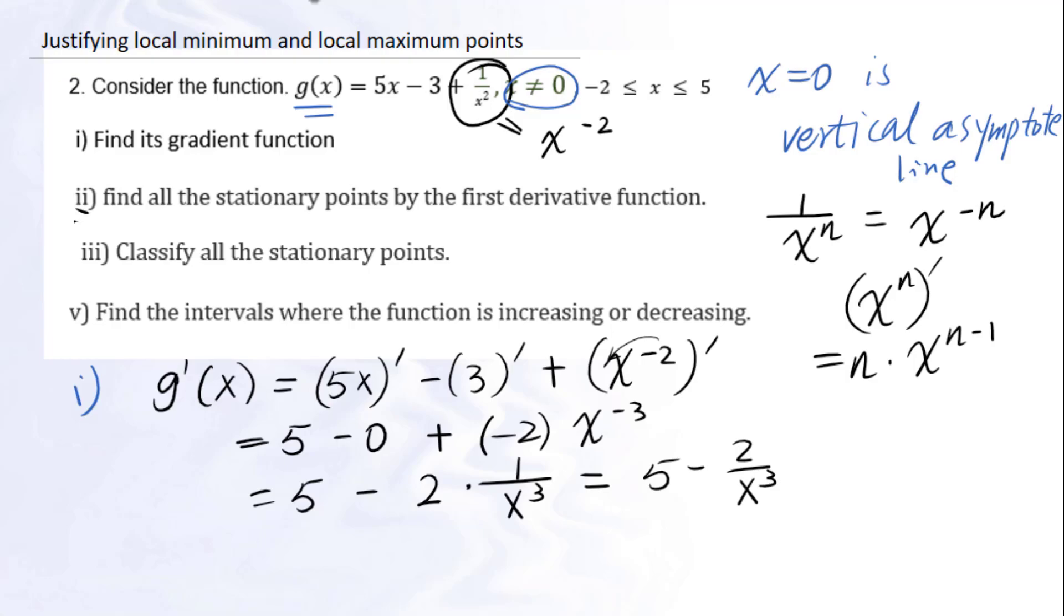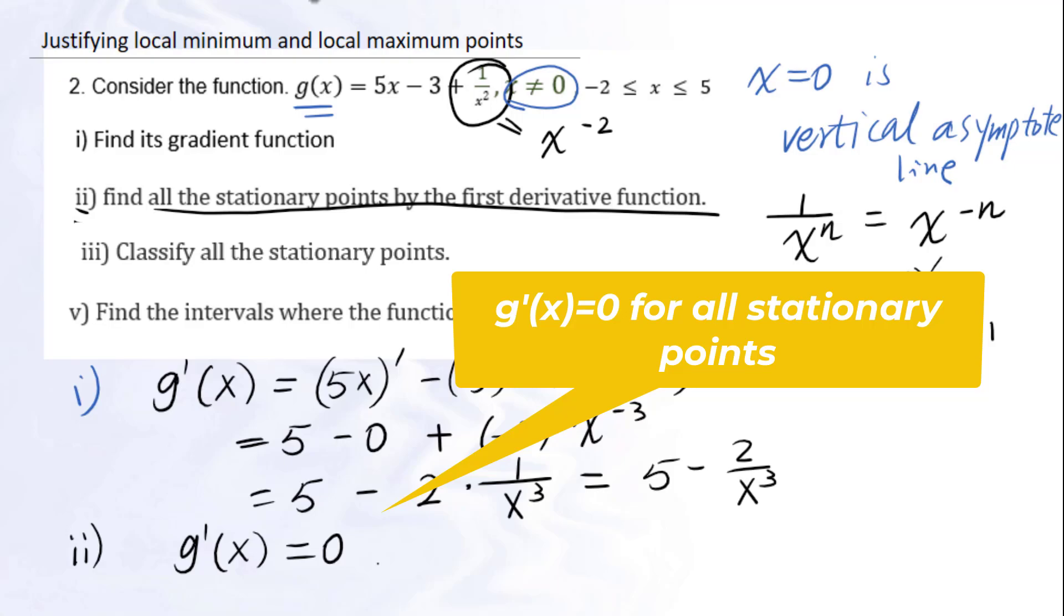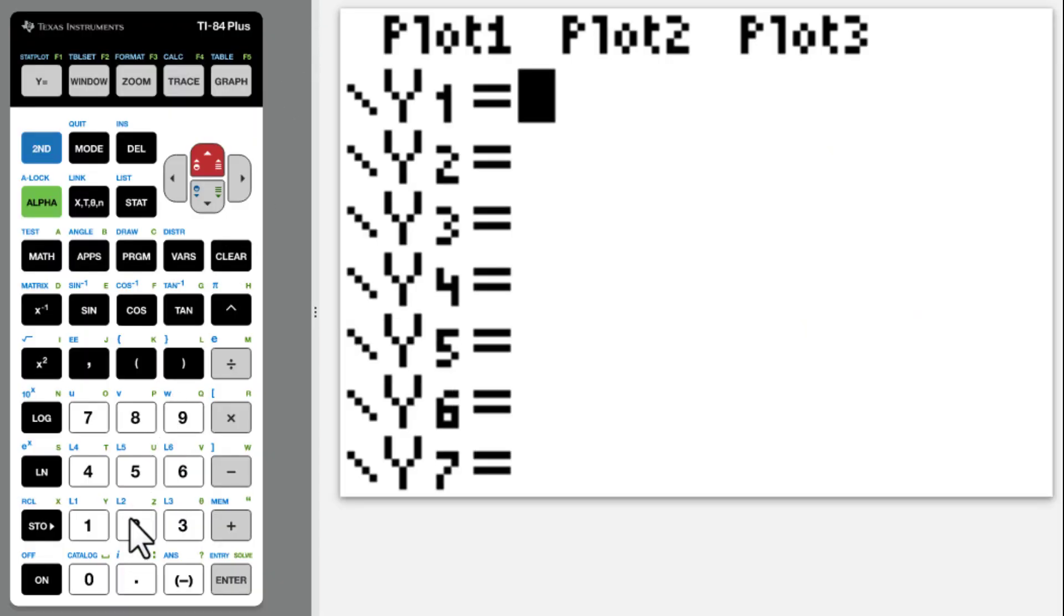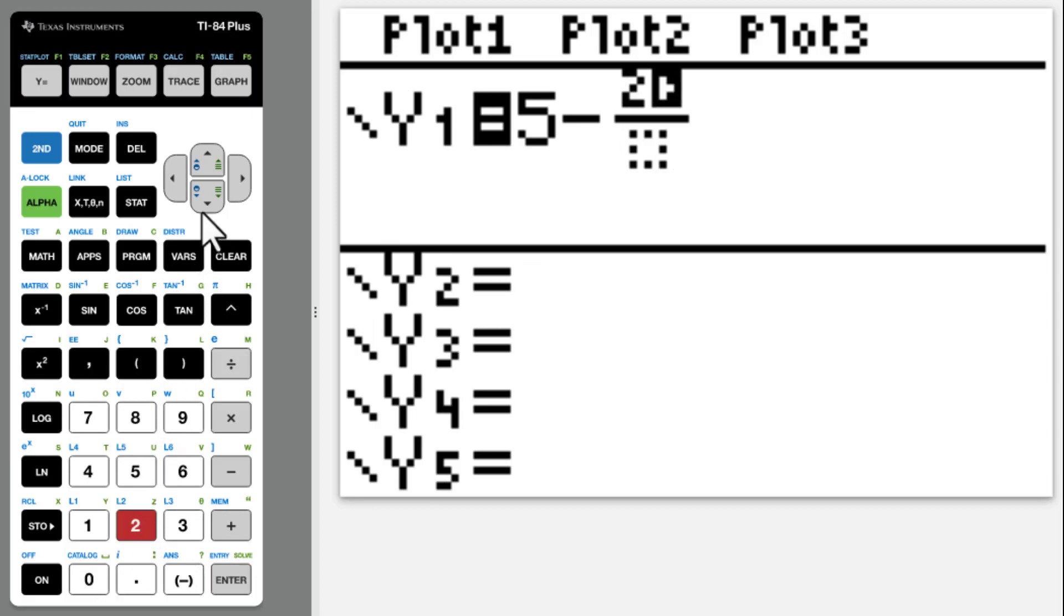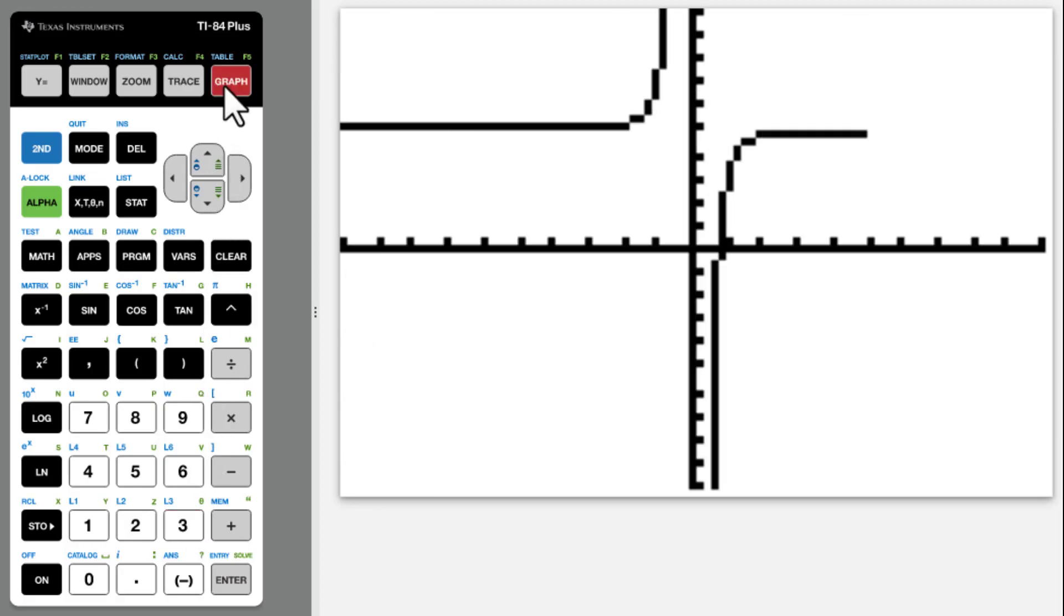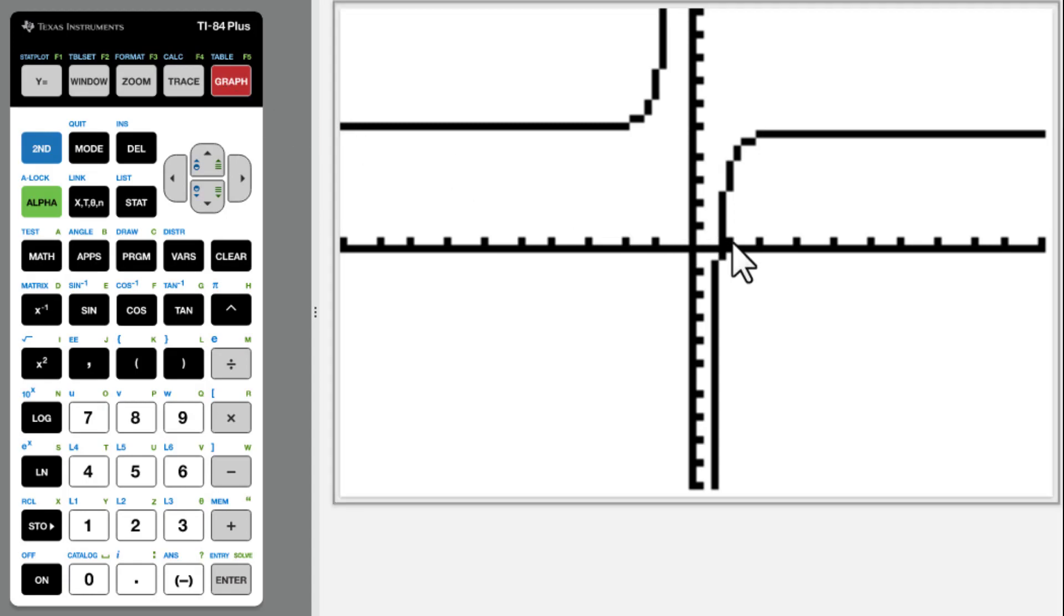Second one, find all the stationary points by the first derivative function. g prime of x equals 0, which means 5 minus 2 over x to the third power equals 0. So we go to y1, 5 minus, and y equals 2 over x to the third power. Then graph. Only one x intercept.